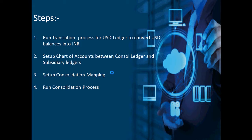The second step is to set up the chart of accounts mapping between the consolidation ledger and the subsidiary ledgers — one mapping between the consolidation ledger and the USD ledger, and another between the consolidated ledger and the INR ledger. The third step is to set up the consolidation mapping, and then run the consolidation process.